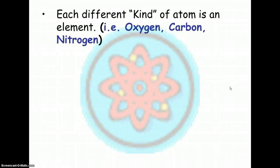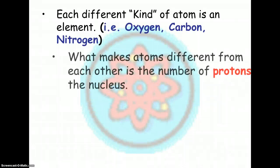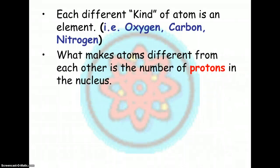We have different kinds of atoms, and this is basically what we look at when we talk about the periodic table: oxygen, carbon, nitrogen, hydrogen, helium, molybdenum, all the different kinds of elements. What makes each element different is the number of protons in the nucleus.